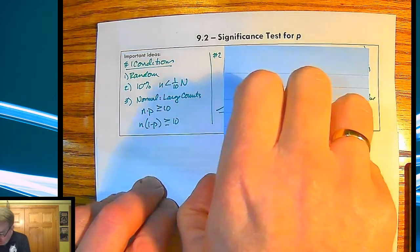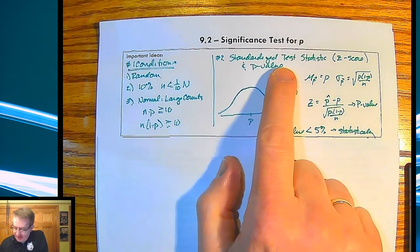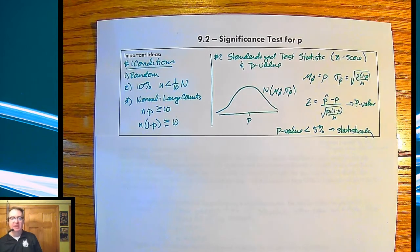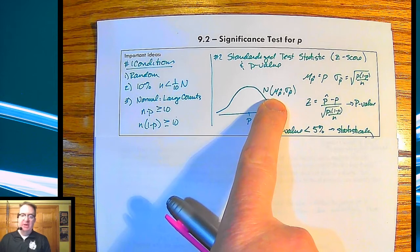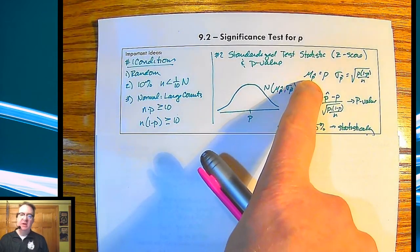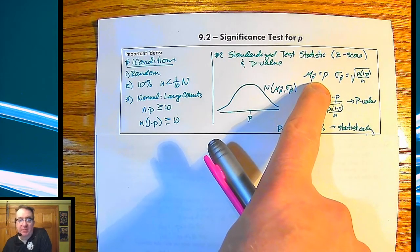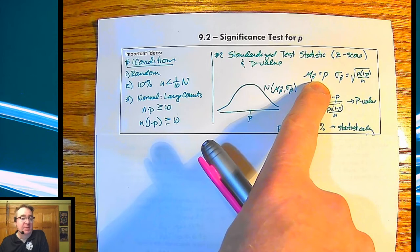So then for two, what are we going to be doing? This is the full significance test setup. In order to have a standardized test statistic for Z scores and P values, we've got our nice little normal curve here. We've got it labeled out nicely here. Remember that our mean here we're going to use as the P value that we're actually assuming for the population, the null hypothesis that we're testing.